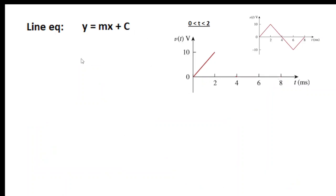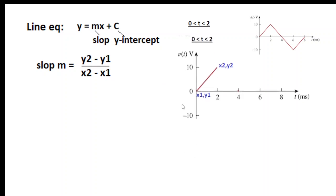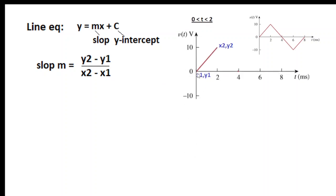The line equation is y equals mx plus c. M is slope and c is y-intercept. The slope formula is y2 minus y1 divided by x2 minus x1. We have x1, y1 as the first point and x2, y2 as the second point.